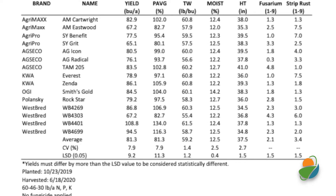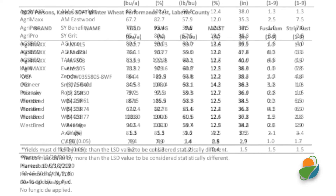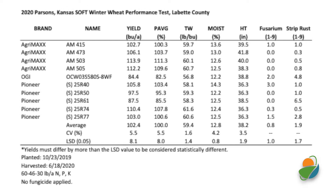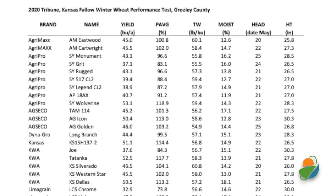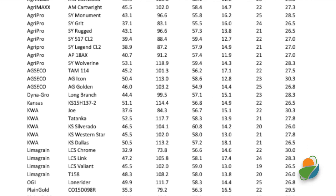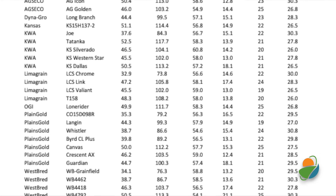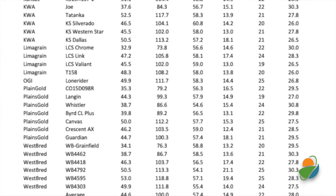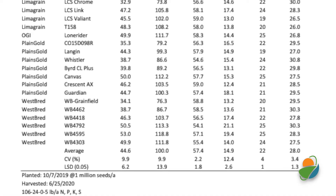Make sure and check yield results from nearby K-State and other universities' variety performance tests and demonstration plots. After selecting several varieties that have shown good adaptability and stability in your region, the list needs to be narrowed down to the number of varieties you intend to plant.